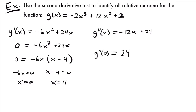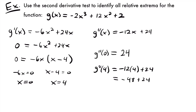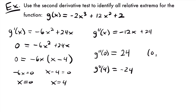Now let's plug in x = 4: g''(4) = -12(4) + 24 = -48 + 24 = -24. Since this value is negative, x = 4 is going to be a relative maximum. We now know both relative extrema. For x = 0, plugging into the original function: the first two terms are 0, leaving just 2. So the relative minimum point is (0, 2).